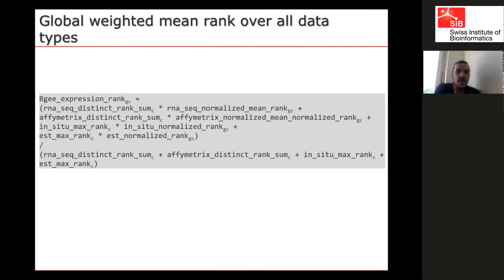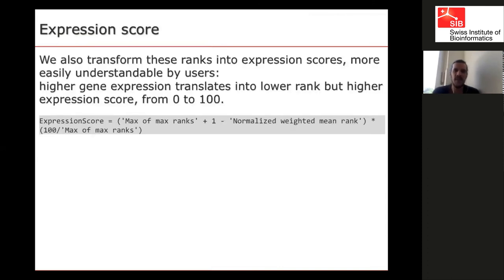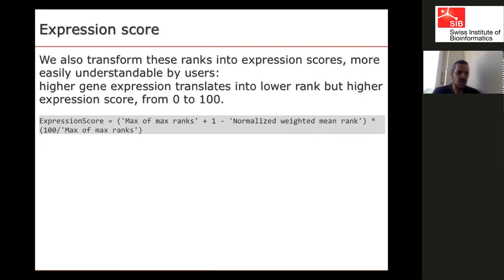RNA-seq gets more weight than in situ hybridization when both data types are available. At the end, BG gives you for each gene in each studied condition a score indicating how highly it is expressed. However, ranks are counterintuitive — the higher the expression, the lower the rank number. So we translate ranks into an expression score normalized between 0 and 100, where a higher score means higher expression. This is much more interpretable.